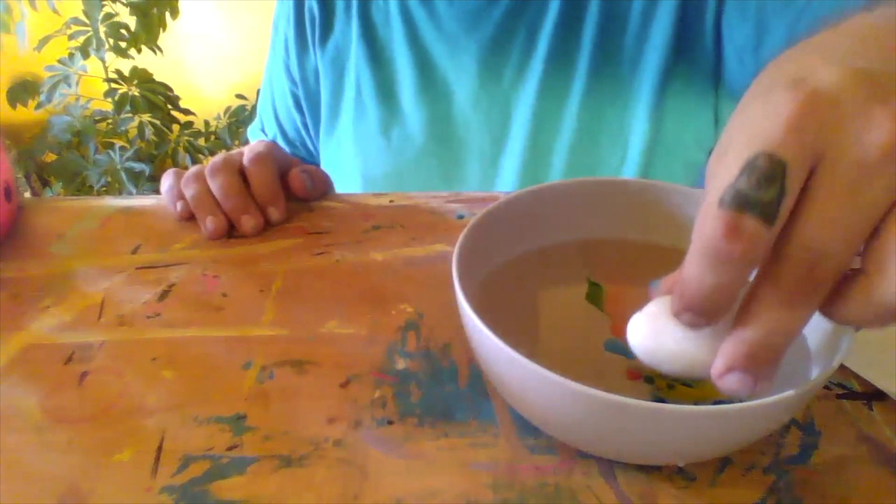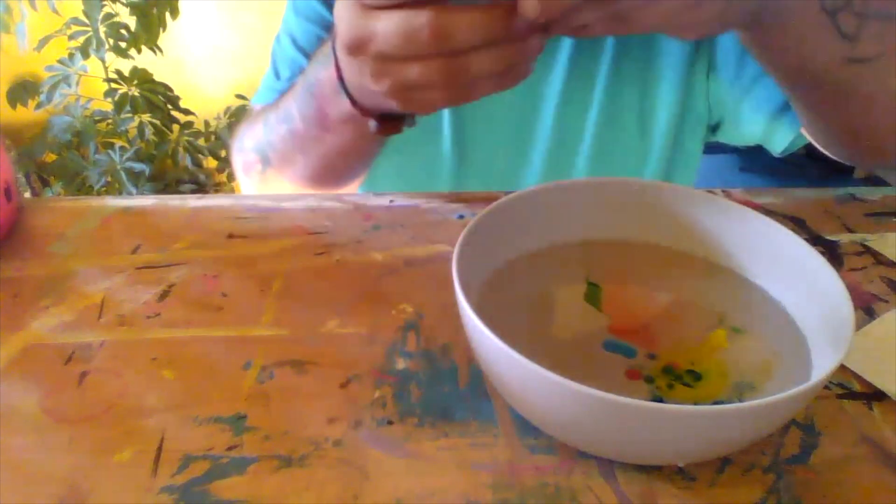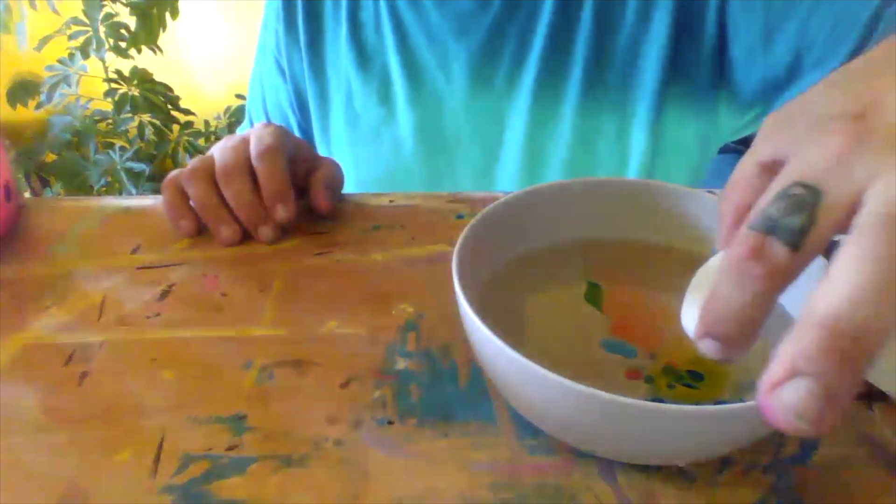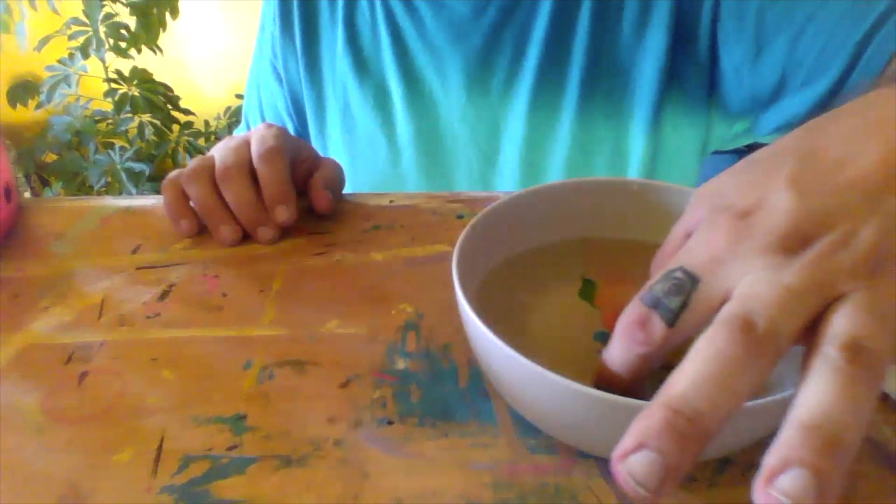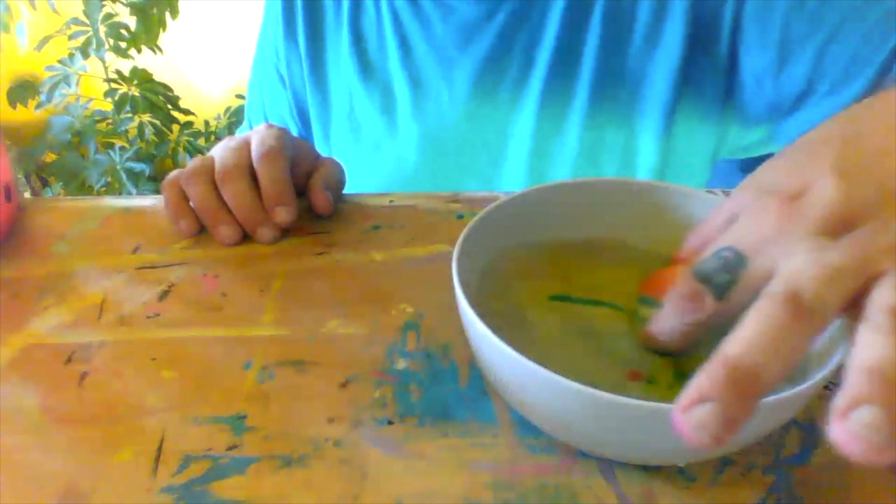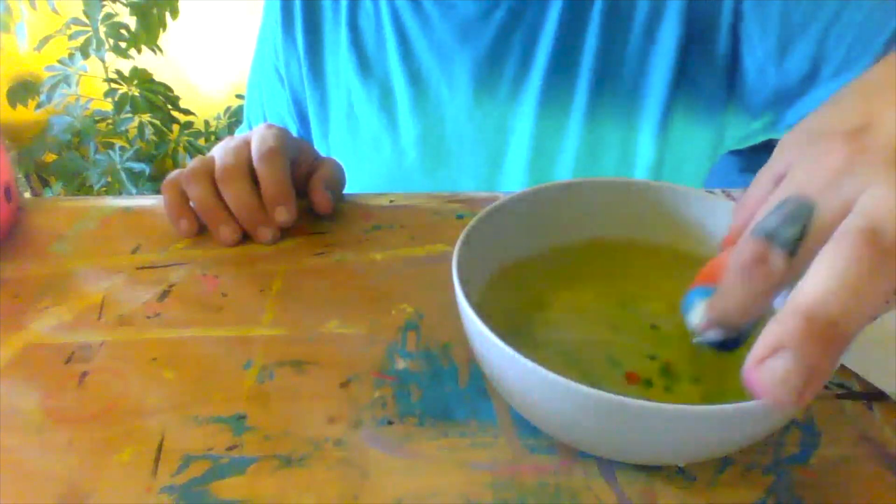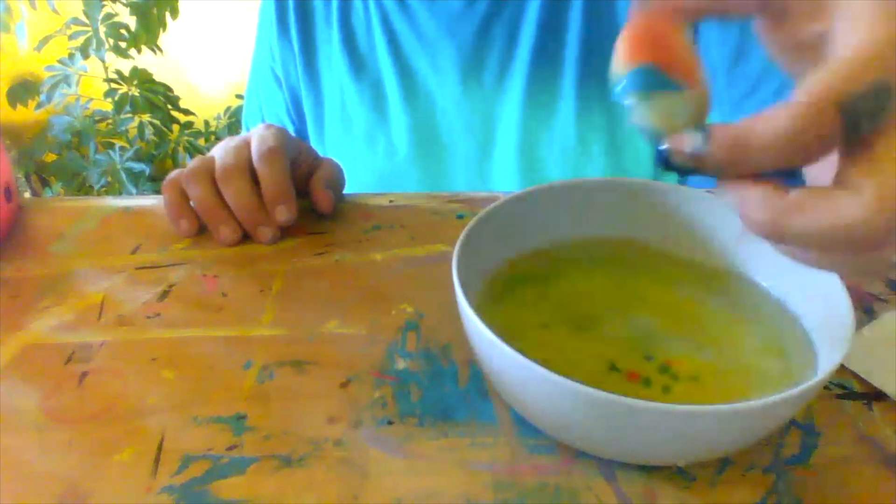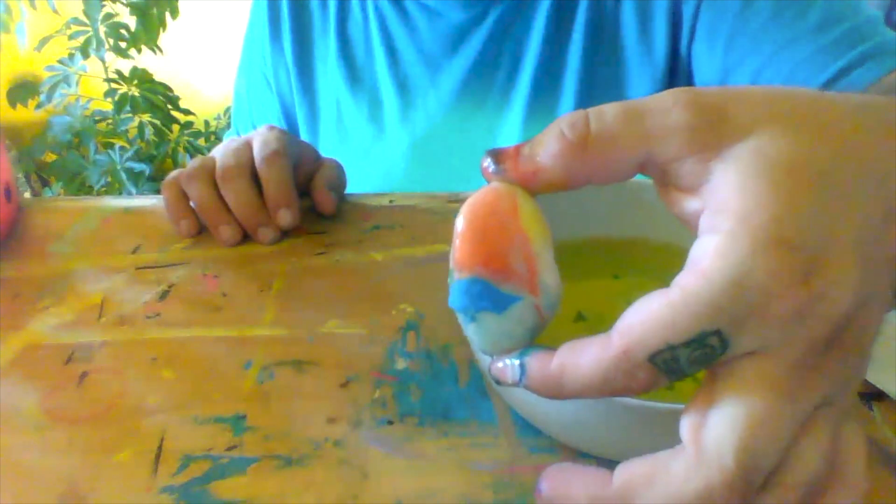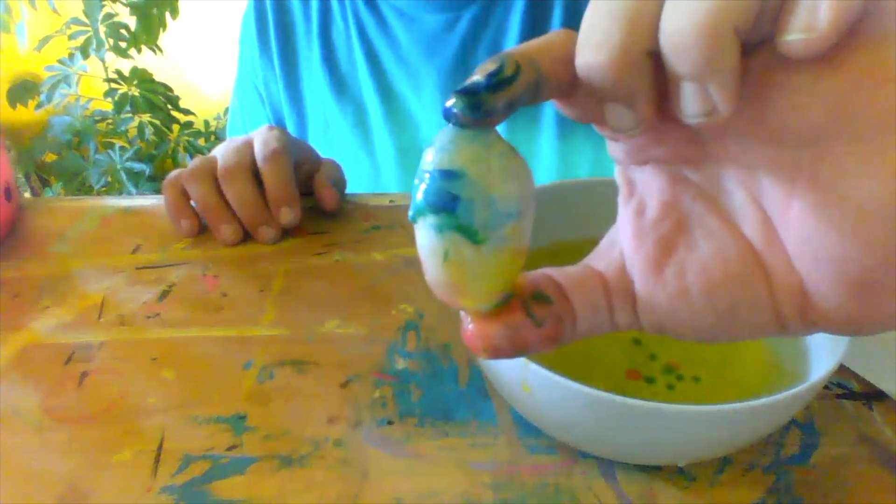So all you're going to do is just take your stone. Let's see if I can minimize my fingers touching it. And then just dunk it in and kind of drag it around. And it'll start picking up all those colors. And voila. You got a cool painted stone.